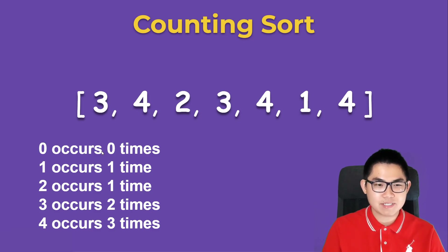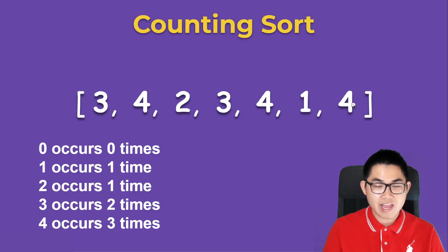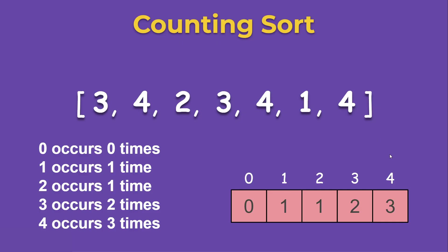We're going to go through the indices from zero to four and see how many times they occur inside this array. Zero occurs zero times, one occurs one time, two occurs one time, three occurs two times, and four occurs three times. We fill in the array where these values are the number of times that the index occurred inside the original array.